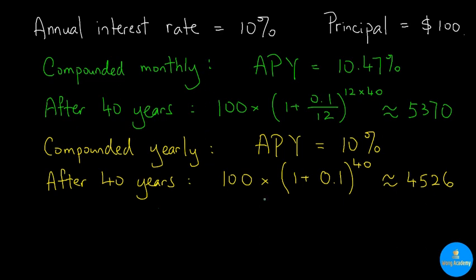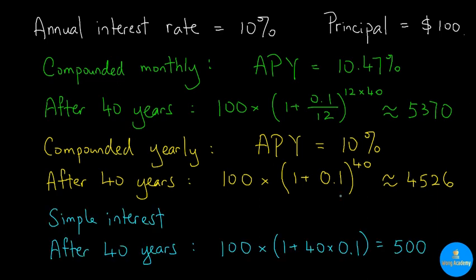then after 40 years, we are only going to get $4,526, which is more than $800 less than before. But both of them are much better than simple interest. For simple interest, we are only going to get a laughable $500 after 40 years.